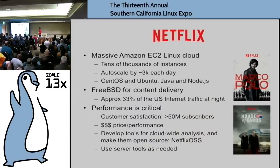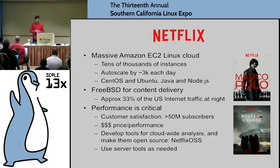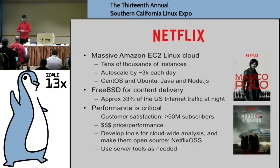I work at Netflix. We have a massive Amazon EC2 Linux cloud and also some FreeBSD for content delivery. Last year when I gave the keynote at SCALE, my primary OS was a fork of Solaris called Illumos, and secondarily Linux. This year, Linux is now my primary OS and FreeBSD is secondary. So I still get a bit of perspective seeing it from different points of view, which is really fun.